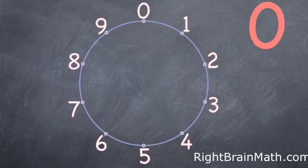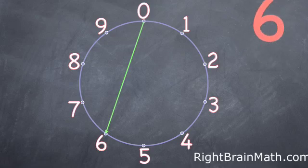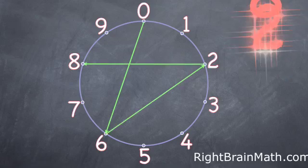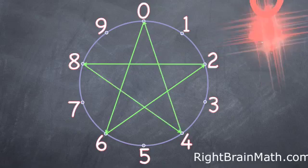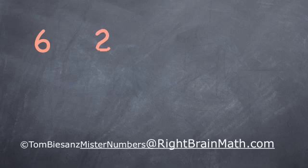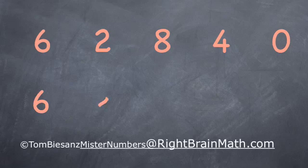Now use the number wheel to help you remember the repeating pattern for the 6s, which is 6, 2, 8, 4, 0. On another piece of paper, write the pattern out: 6, 2, 8, 4, 0. And again: 6, 2, 8, 4, 0.